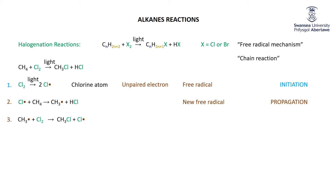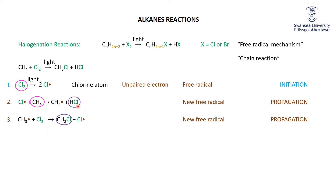That methyl radical will go ahead and find another chlorine atom, grab it, and make chloromethane (CH3Cl), with a Cl radical left over. This is again a propagation step — you've gone from the methyl free radical to a chlorine free radical. Checking this against our overall reaction: CH4 and Cl2 are the reactants; we make HCl in the second step and CH3Cl in the third step. So we've got a sensible mechanism that explains our overall reaction.